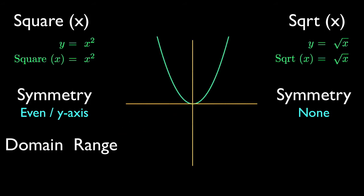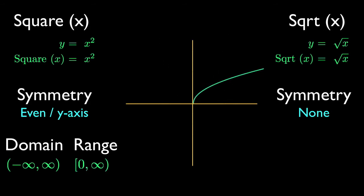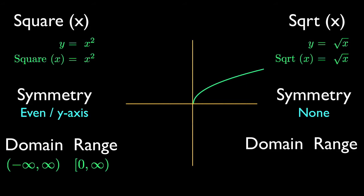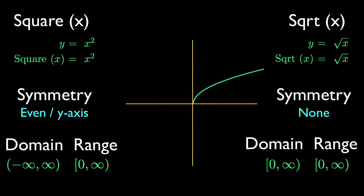The domain and range of the square function can be read off the graph. Like all polynomials, it accepts all real values for x, while it ranges from 0 to positive infinity. As befits a nearly inverse function, the domain of the square root function is the range of the square function, but because we exclude the symmetry across the x-axis, the range is restricted to non-negative real numbers.